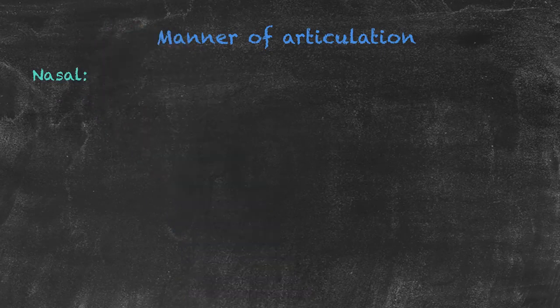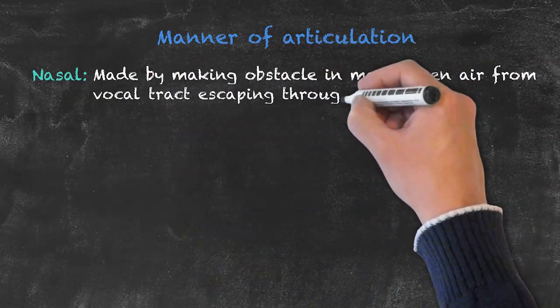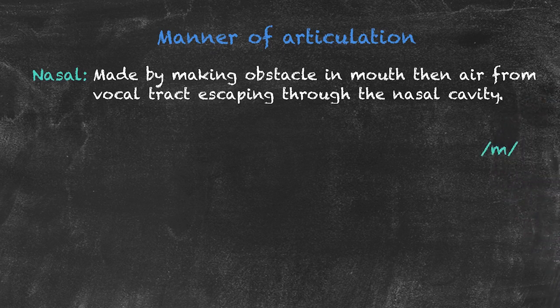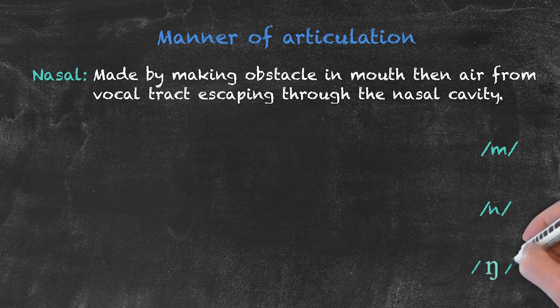And now we have our nasal sounds. There are three nasal sounds, and basically the pattern of air moving out of our vocal tract has to do with two big instances: a closure in the vocal tract. Aside from the plosives and affricates, what we have is air escaping through our nasal cavity.